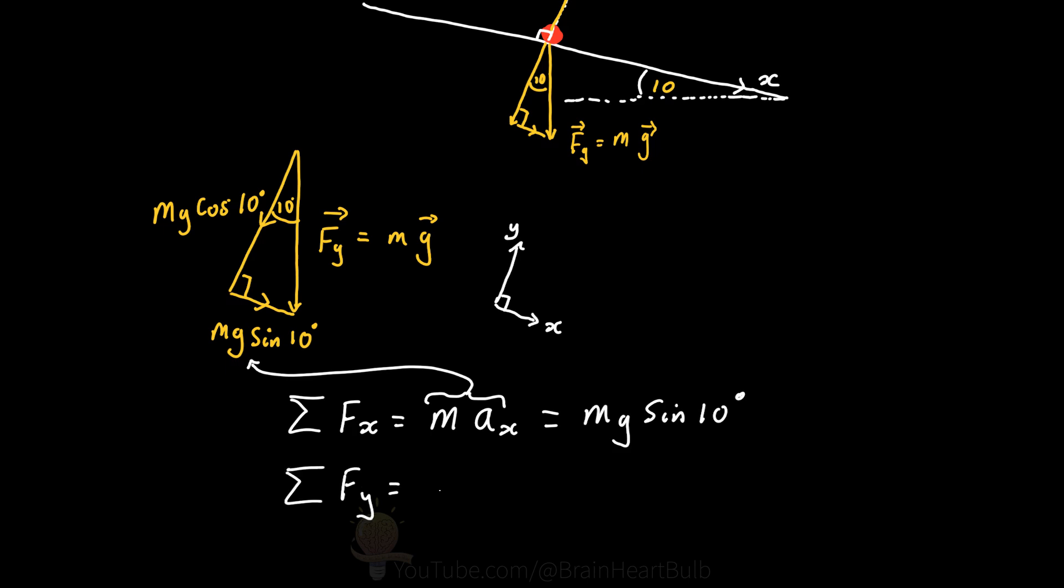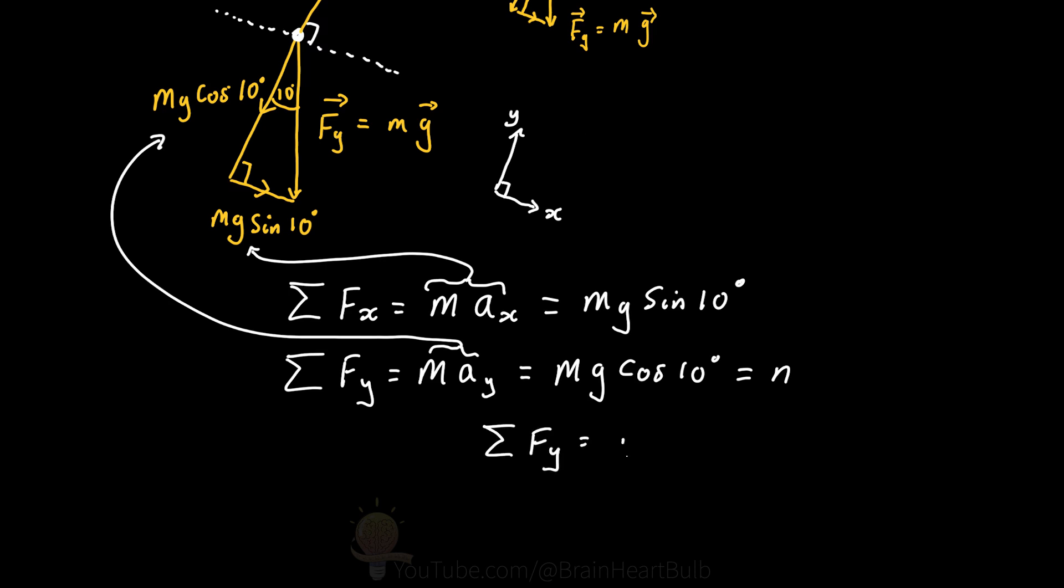We also know that the car is not accelerating in the y-direction, so the normal force, and our force pointing in the opposite direction, the mg cosine 10, is going to equal zero.